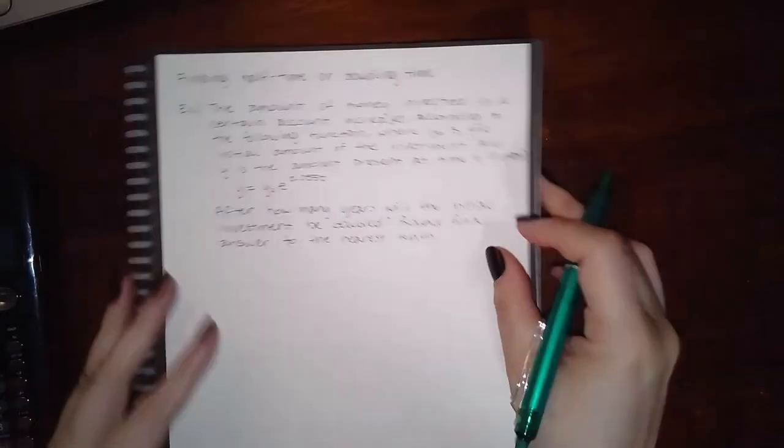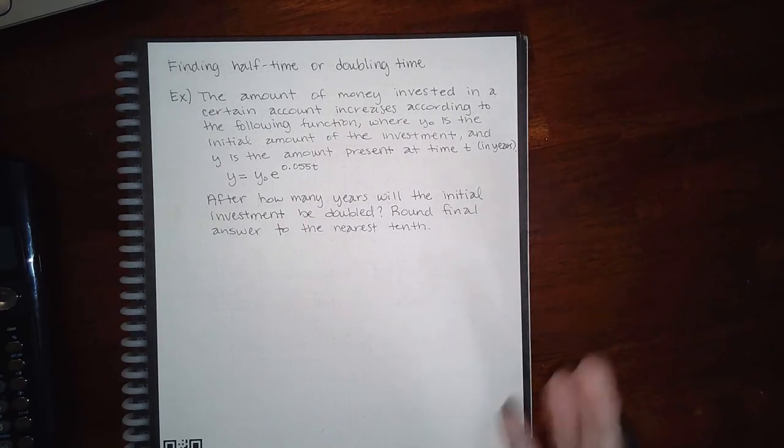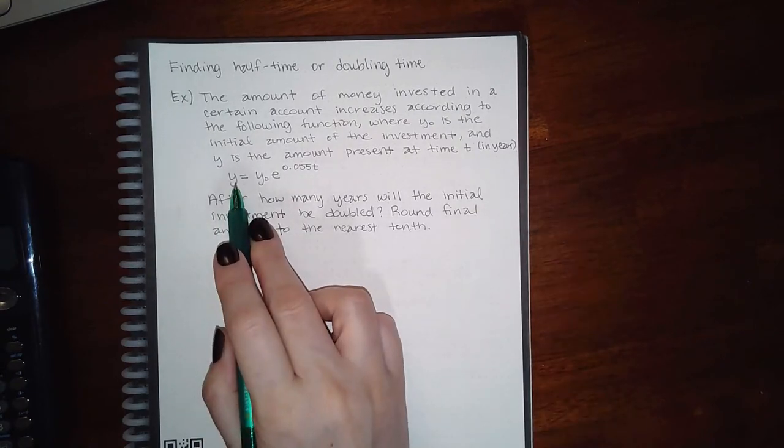Okay, let's see. This topic is the last topic in this section. It says finding half-time or doubling time. The amount of money invested in a certain account increases according to the following function, where y₀ is the initial amount of the investment and y is the amount present at time t. So after, this one's the amount after some time.